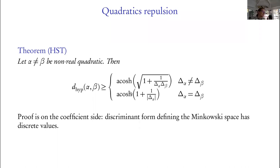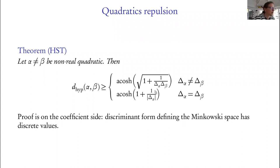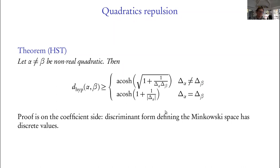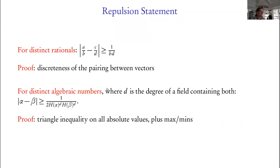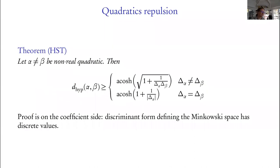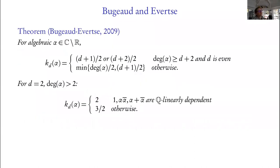That leads to a statement about hyperbolic distance as calculated from the Minkowski space — arccosh(1) = 0, so this is exactly the analogous quantity to the classical case — you get a lower bound of 1/(discriminant). It looks pretty similar. If they're from the same field they repel just a little bit better, which comes out naturally and is actually visible here: you're taking d to be the degree of the field containing both of them.